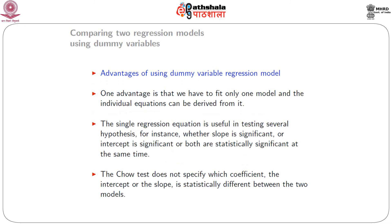Now that we have fitted and compared two regression models using both approaches, let us list the advantages of using the dummy variable. Although both the Chow test and the dummy variable approach give the same ultimate result, there are merits to the dummy variable approach. One obvious advantage is that we only need to fit one regression equation in the dummy variable case, whereas the Chow test requires fitting three separate regression equations and obtaining residual sums of squares from all three.